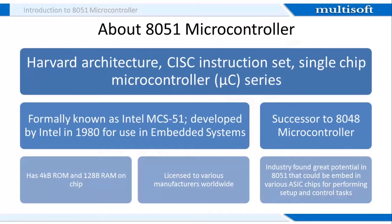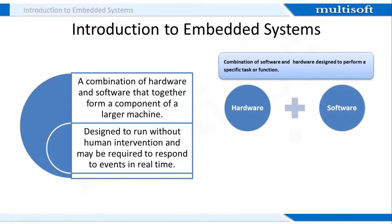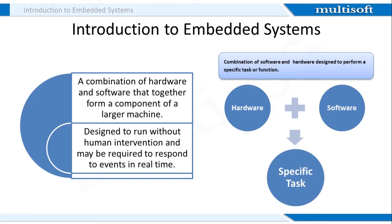Let's now understand what embedded systems are. The field of embedded systems is wide and varied, and it is difficult to pin down exact definitions or descriptions. Commonly, embedded systems are defined as a combination of hardware and software that together form a component of a larger machine. A good example of an embedded system is the microwave oven — almost every household has one, and tens of millions of them are used every day. But very few people realize that a processor and software are involved in the preparation of their lunch or dinner.